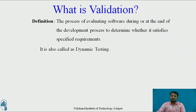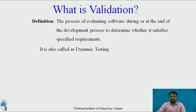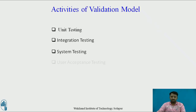Validation is also called dynamic testing. Validation testing ensures that the product actually meets the client needs. It can also be defined as demonstrating that the product fulfills its intended use when deployed in an appropriate environment. It answers the question: are we building the right product? The testing types are unit testing, integration testing, system testing, and user acceptance testing.